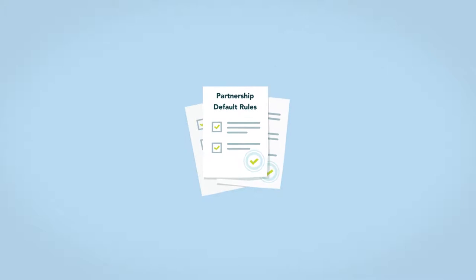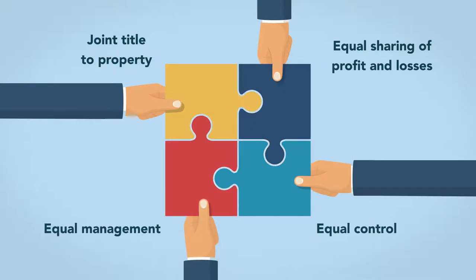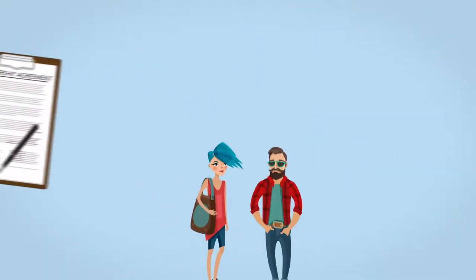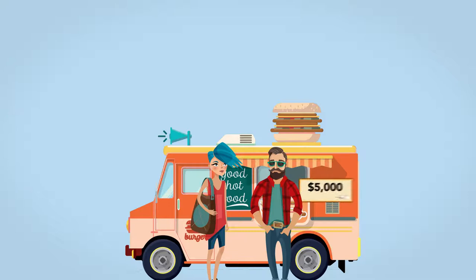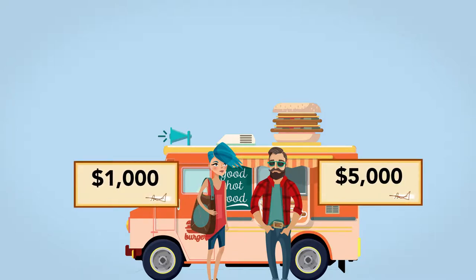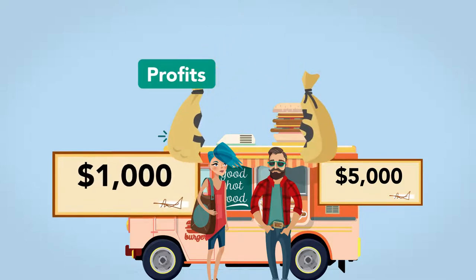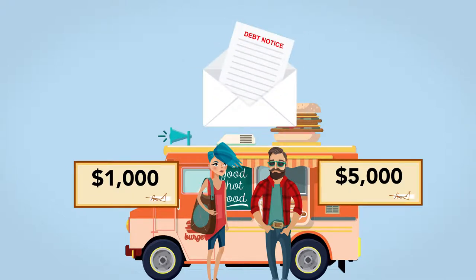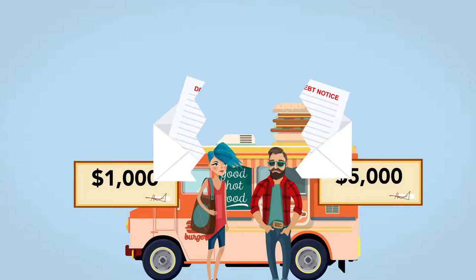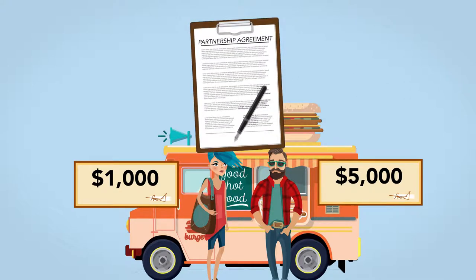Not taking the time to draft a partnership agreement causes the state's default rules to apply. When there is no partnership agreement, all partners will have joint title to property, equal sharing of profit and losses, and equal control and management. For example, Brad and Kelsey form a general partnership to operate a food truck but forgo drafting a partnership agreement. Brad contributes $5,000 while Kelsey contributes $1,000. Is it fair for them to equally share profits when Kelsey invested a fifth of Brad's contribution? Because the default rule may cause this incongruous result, the partners would be well advised to adopt a partnership agreement.